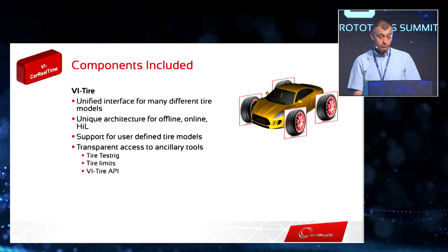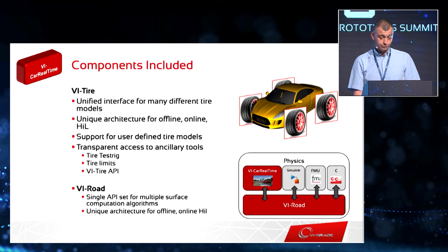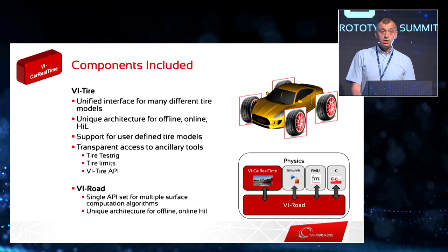The first key component of VI CarRealTime is VI Tire. VI Tire is our framework able to hook up multiple commercial tire models, as well as user tires, and expose them to the vehicle connection with a unified interface. This makes the solution extremely transparent, unique, and able to run at all stages from offline down to real-time. The other component is VI Road, which is connected tightly to VI Tire and is a module able to cover high-resolution surfaces — all within a unique architecture that can be moved seamlessly from offline down to real-time and HIL.